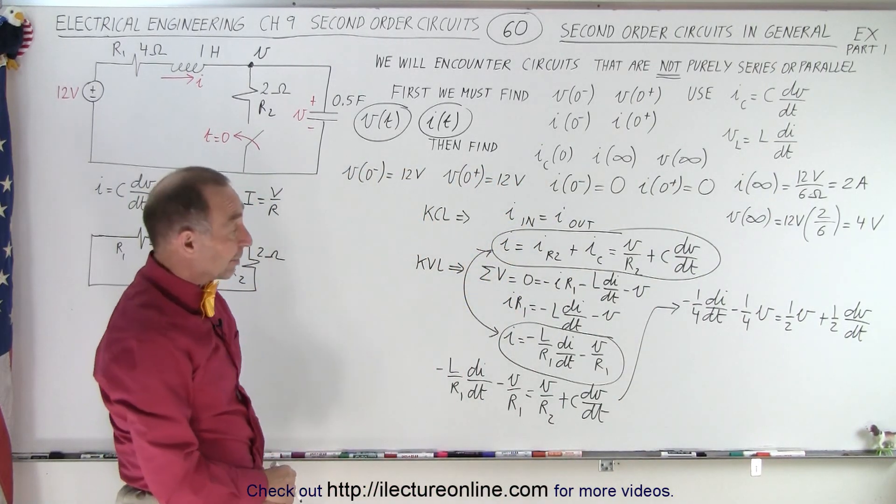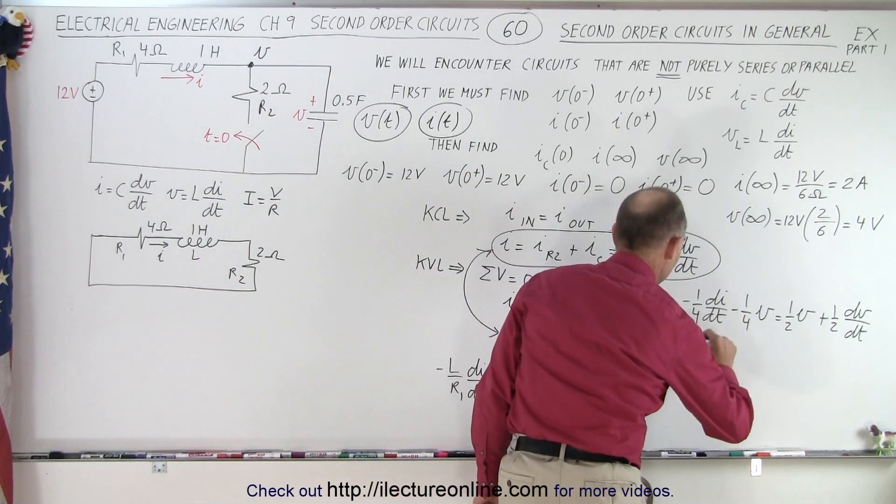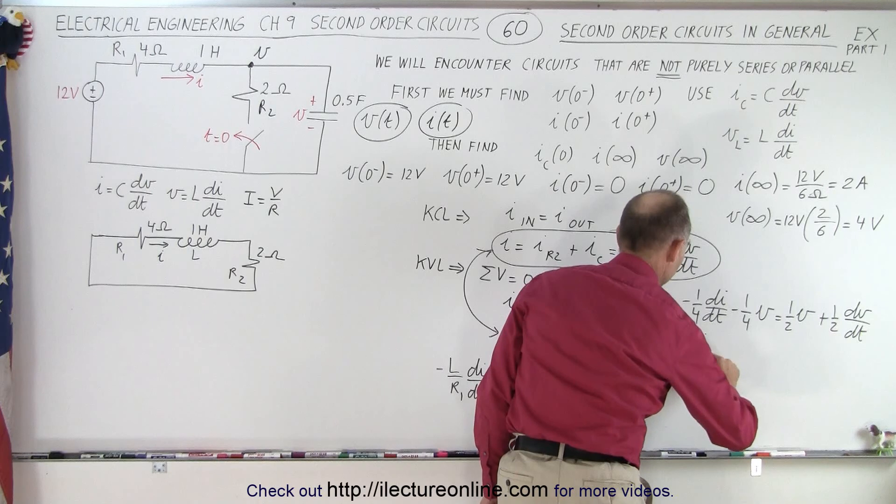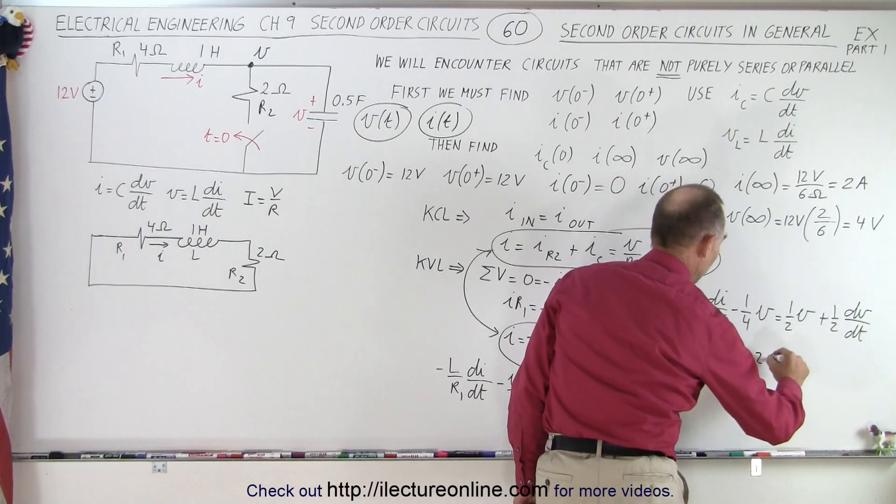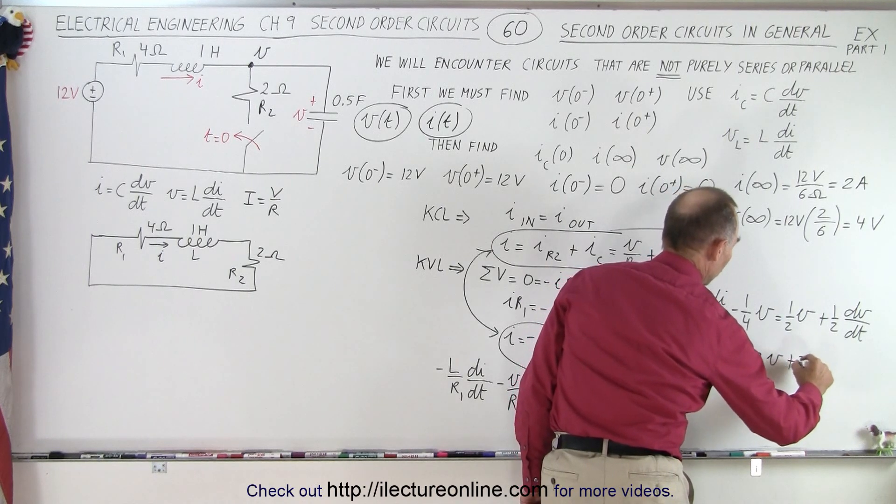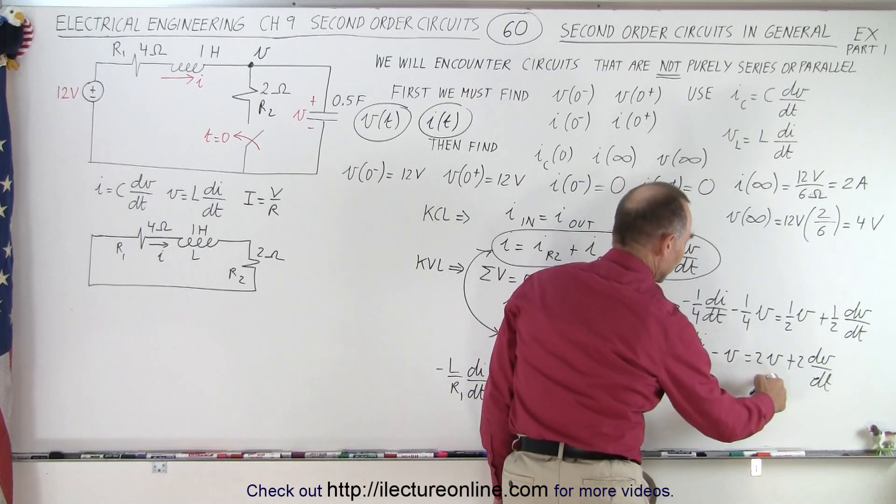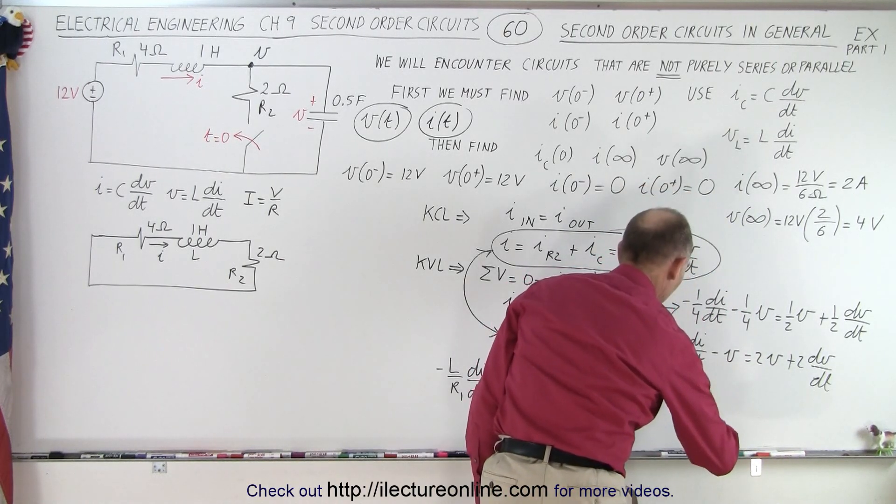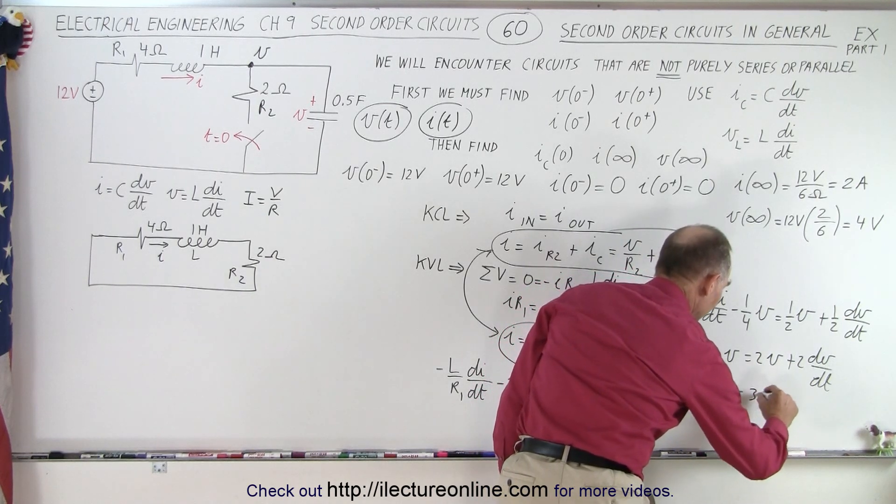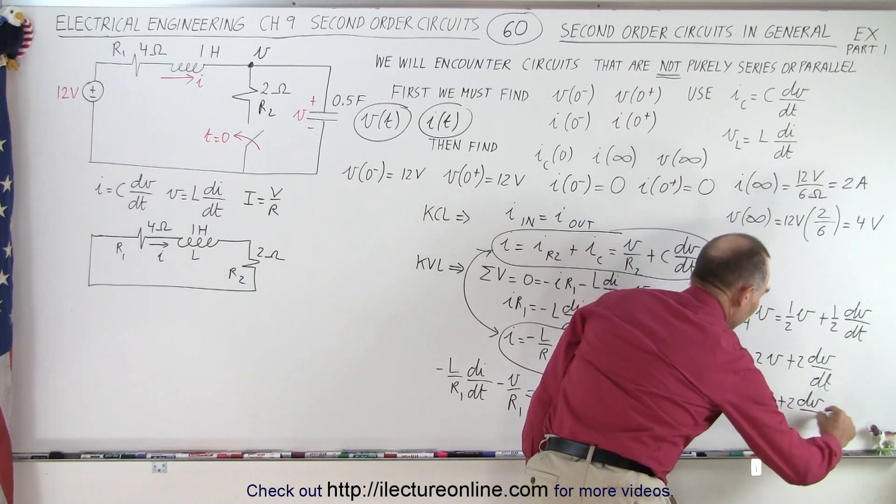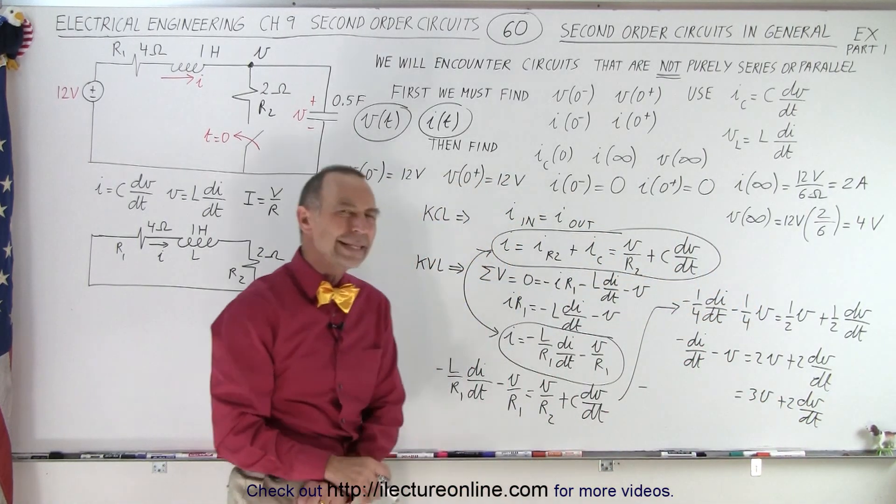At that point, I think it's better to multiply everything by 4 to get rid of some of these fractions. So we end up with minus dI/dt minus V equals 2V plus 2 dV/dt. And then if I move this V over to that side, I can add them together, that's 3V. So I end up with minus dI/dt. I'm going to leave that alone for now. That would be 3V plus 2 dV/dt. So we simplify it as much as possible. But what about the dI/dt?